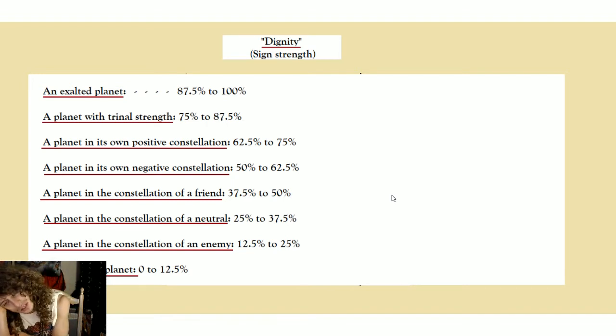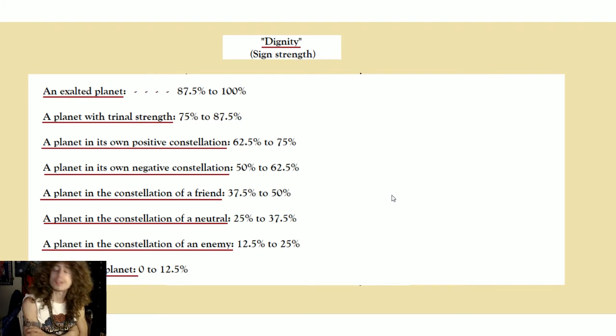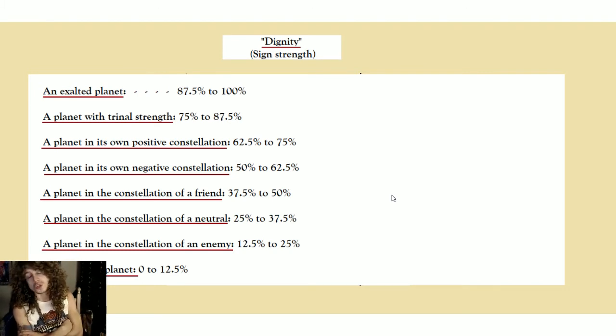A planet in the constellation of an enemy has little to no strength, almost none. So this is, for example, if the Sun is in the sign of Libra or Taurus or Capricorn or Aquarius. The Moon has no enemies, actually, thankfully. Or this is Jupiter in the sign of Virgo or Gemini or Libra or Taurus—then that planet will have basically next to no strength.